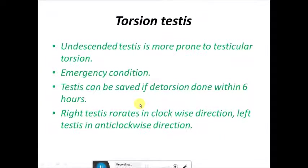Undescended testes are more prone to testicular torsion. One important point is that it is always an emergency condition — testes can be saved if surgery is performed within six hours and detorsion is done. The right testes rotates in a clockwise direction during torsion, while the left testes rotates in an anti-clockwise direction.